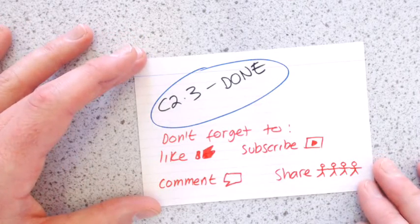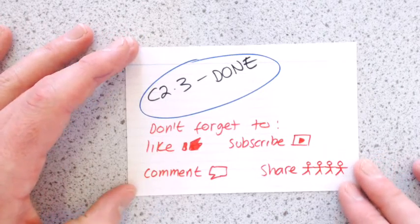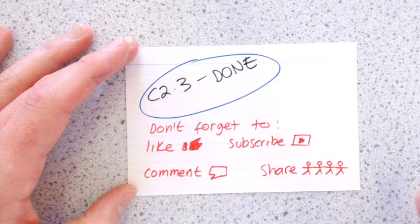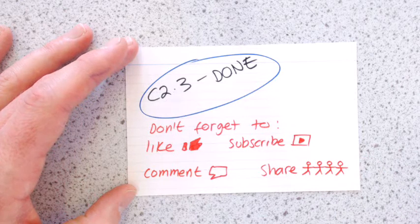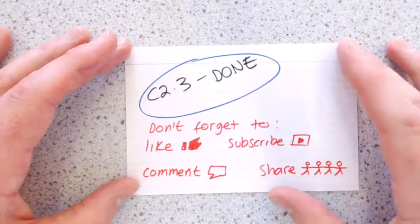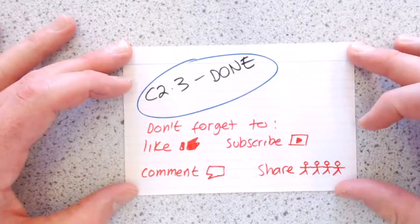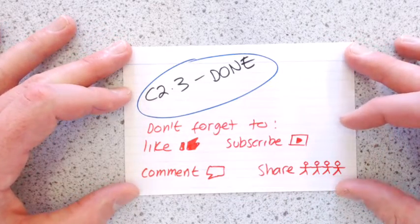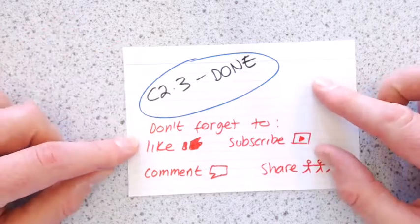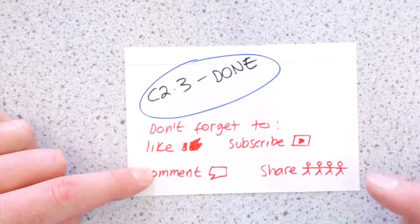That's it. C2.3 atomic structure is done. So C2.1, 2.2, and 2.3, that's everything that you need for additional science paper one. So just to remind you, don't forget to like, subscribe, comment, and share.